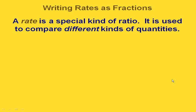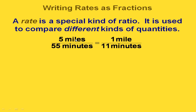When we're talking about rates, rates are just special kinds of ratios used to compare different kinds of quantities. For example, 5 miles in 55 minutes is the same rate as 1 mile in 11 minutes. We factor the 55 into 5 times 11 and cancel the 5s, leaving us with 1.